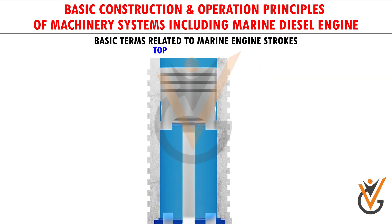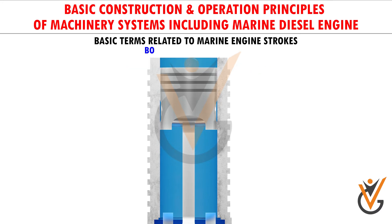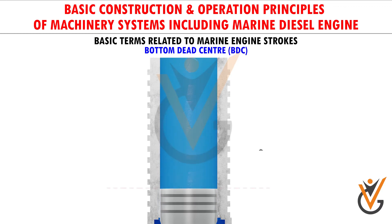Top Dead Center (TDC): top dead center is the position of an internal combustion engine's piston when it is at the very top of its stroke. Bottom Dead Center (BDC): bottom dead center is the position of an internal combustion engine's piston when it is at the very bottom of its stroke.